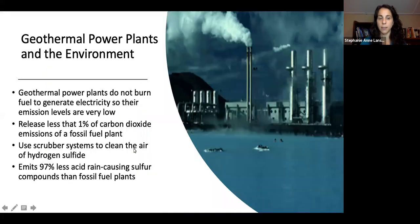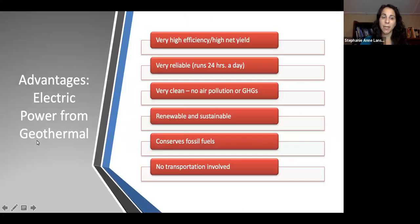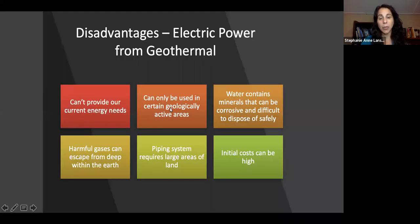Geothermal plants don't burn fuel to generate electricity, so emissions are very low—they release just one percent of the carbon dioxide emissions of fossil fuel plants. They use scrubber systems to clean hydrogen sulfide and emit less sulfur compounds than fossil fuels. They're highly efficient and reliable 24 hours a day. This isn't like sun or wind that fluctuates. They conserve fossil fuels, and there's no transportation involved.